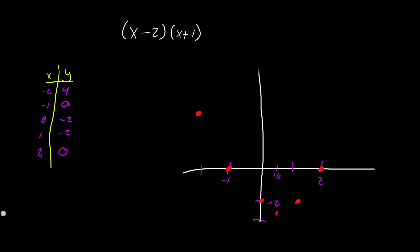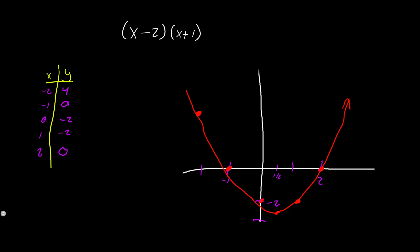So we're going to have a parabola that looks something like this. That should be the rough sketch of our parabola. We have our graph now, and we were able to get our vertex from the two x solutions.